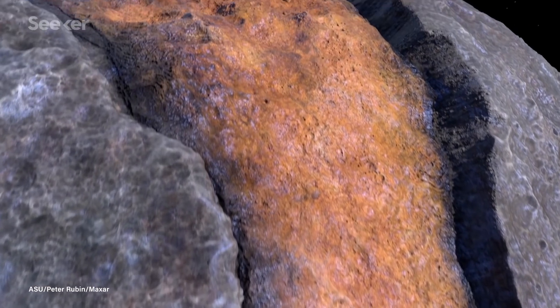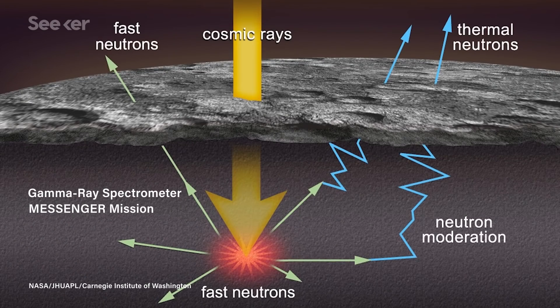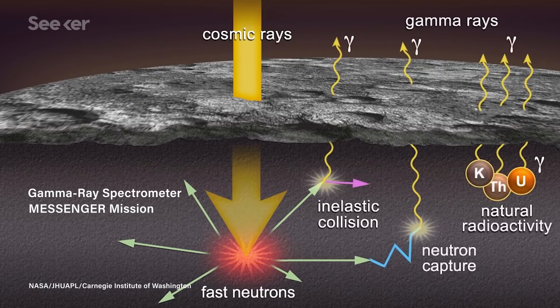And on Psyche, when these cosmic rays strike the surface, the atoms that they hit will then give off a gamma ray or a neutron in return. And the energy of that is exactly indicative of what kind of atom it was.